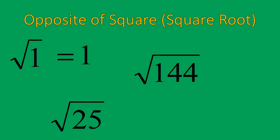Welcome back. Hopefully, you were able to find that the square root of 1 is 1, the square root of 144 is 12, and the square root of 25 is 5. Those are square roots. What number times itself will give me the number inside of that symbol? Okay? That's what a square root is.